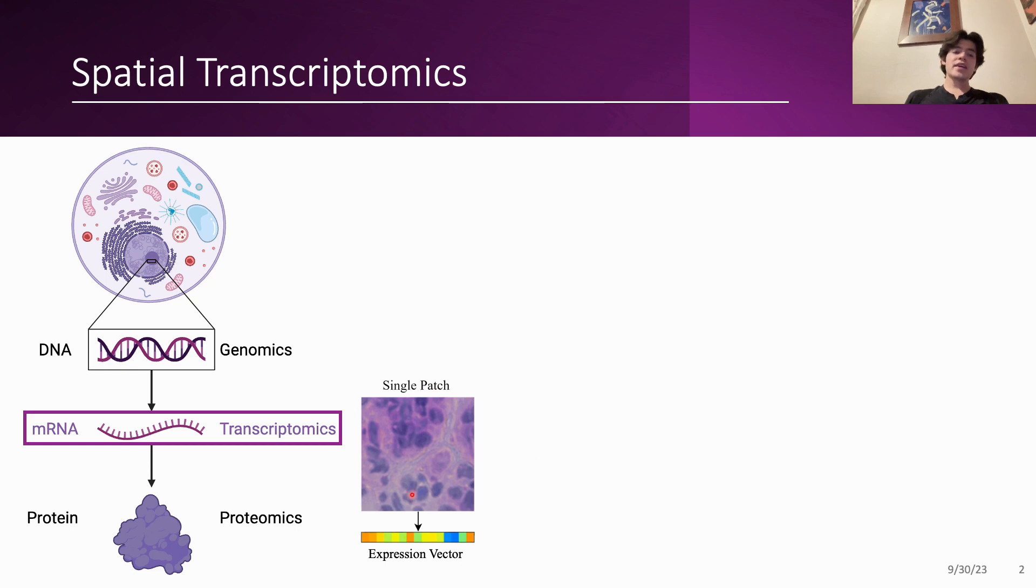And here we can take a single sample, let's say a tissue patch, and with that we can obtain an expression vector where each component is associated with a single gene and the value of the component is the level of expression of that gene.